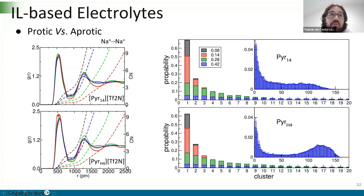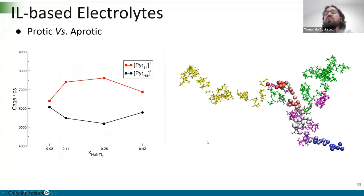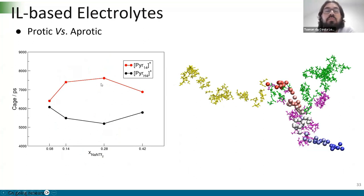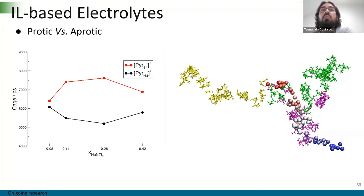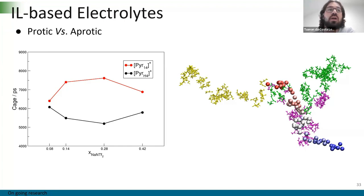In the cluster analysis, increasing sodium concentration generally increases aggregate size. At 0.4 concentration, the protic system shows a higher contribution from large aggregates, while in the aprotic ionic liquid we still have large aggregates but without the same predominant peak seen in the protic system. Looking at ion cage lifetimes: in the aprotic system, increasing salt concentration increases the lifetime — the behavior generally expected in ionic liquids — but at 0.42 we see a decrease, likely due to formation of large aggregates. In the protic system, we see the opposite: a decrease in lifetime with increasing concentration, then an increase at 0.4. For now we do not fully understand why, but we are investigating.